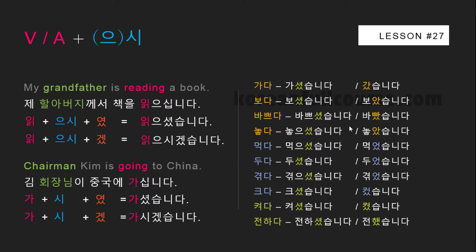Here's the proof: in normal situations where you don't need to show respect to a person you are talking about, you would have to think which of the three past tense suffixes to use. But if you use the honorific particle 시, then the conjugation becomes a lot easier.